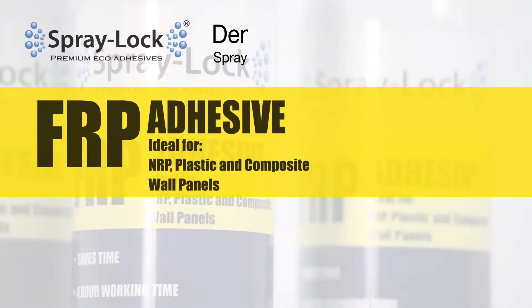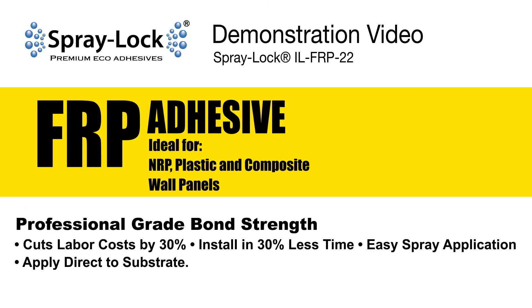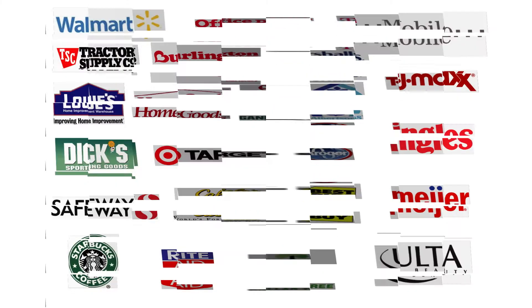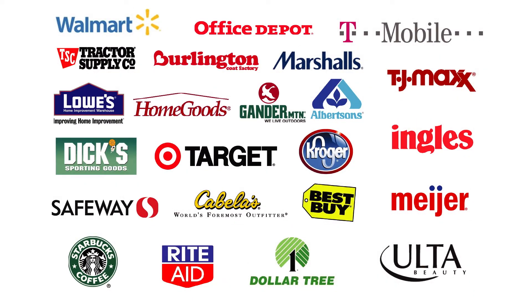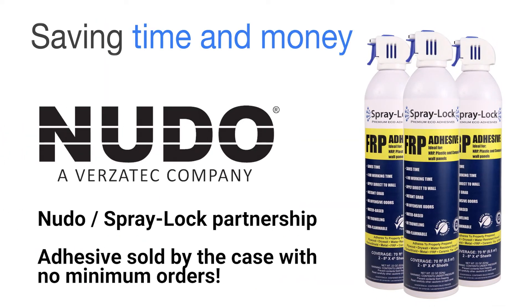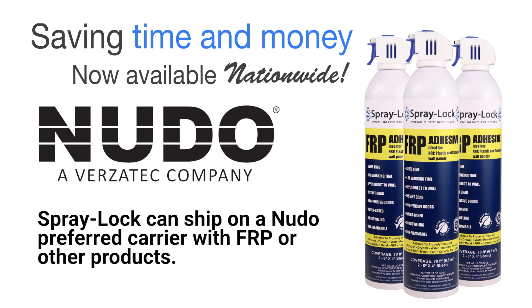Spraylock FRP Adhesive is proven in over 26 million square feet of warranted wall panel and wall LVT installation in the largest commercial environments across the U.S. This proven technology saves time and money and is now available nationwide.